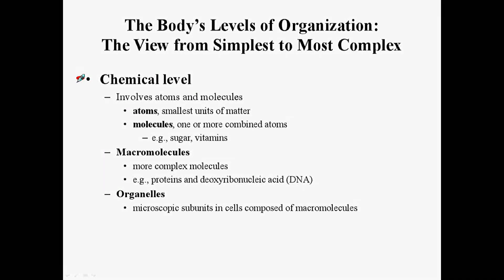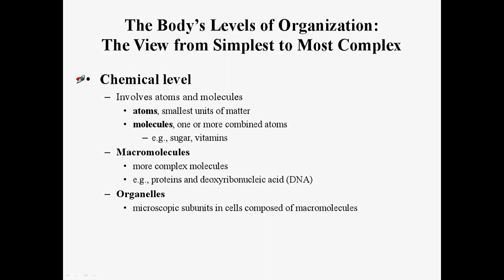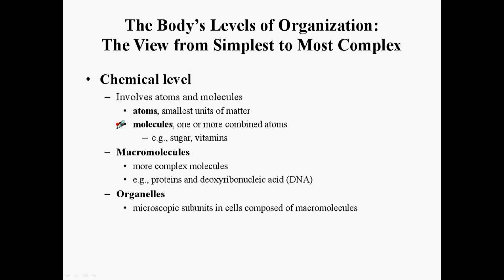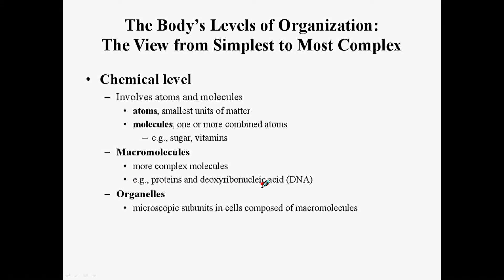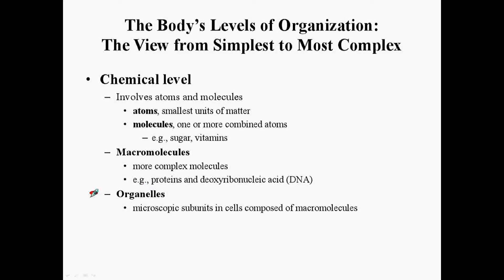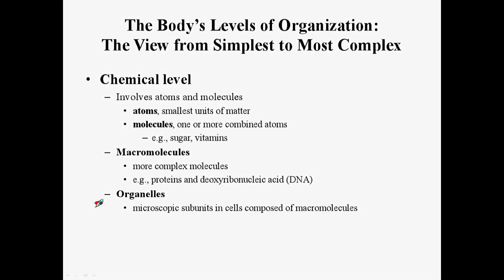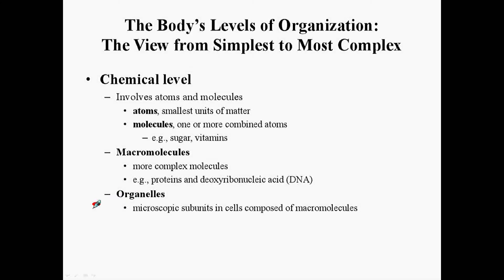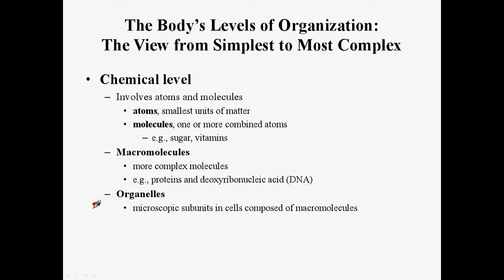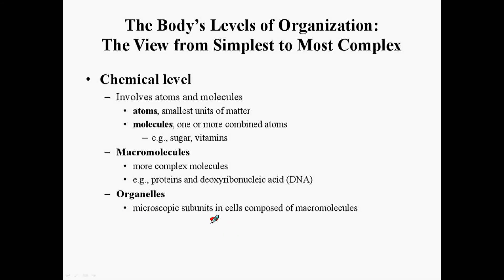The chemical level involves atoms and molecules. Atoms are the smallest units of matter. Then you have molecules, which are one or more combined atoms. Then you have macromolecules, which are simply big molecules, such as the organic macromolecules — proteins or nucleic acids, with DNA as an example. Also at the chemical level are organelles. Notice the word 'organ' at the beginning of organelles. They are microscopic subunits in cells composed of macromolecules that carry out specific functions, much like organs do in humans.